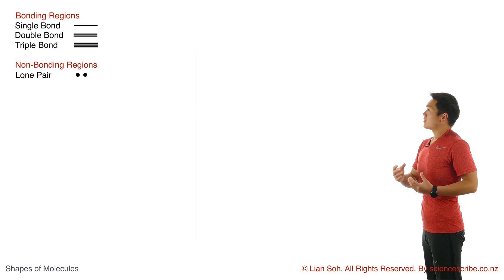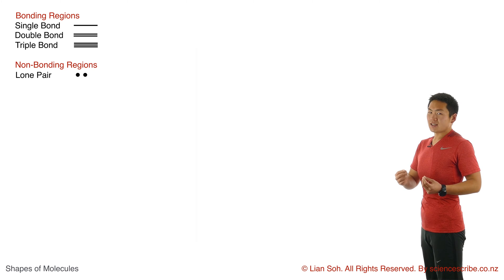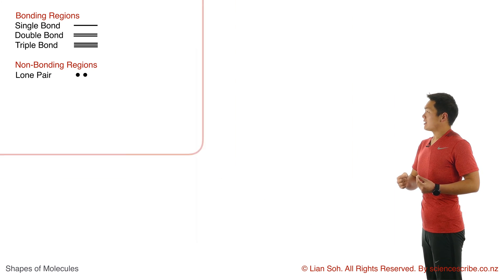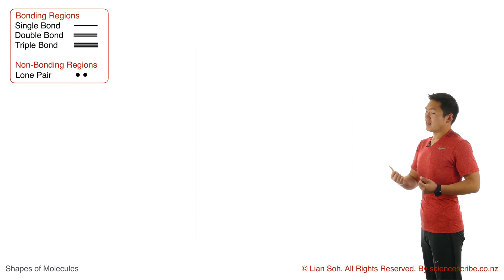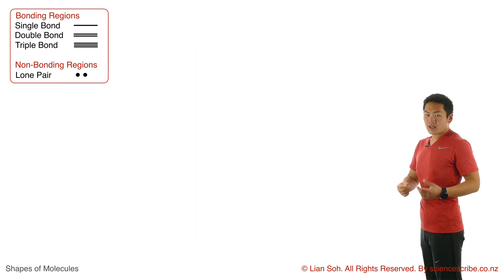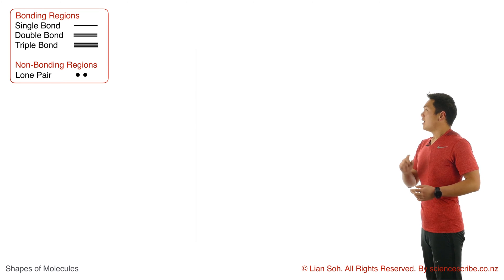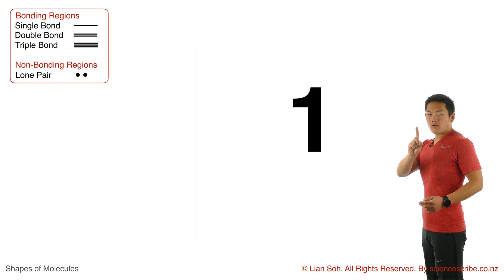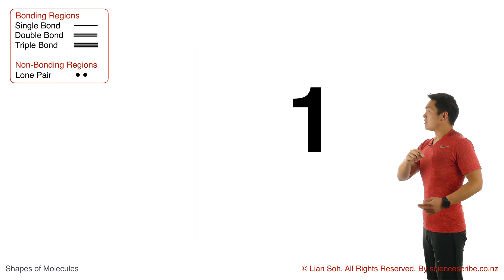As for later on, we're going to end up counting the regions of electron density. What matters is that whether you've got a single bond, a double bond, a triple bond, or a lone pair, each of those only counts as one region of electron density.